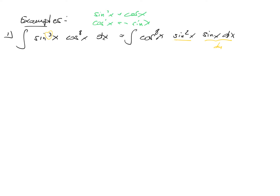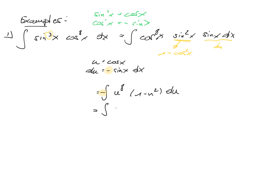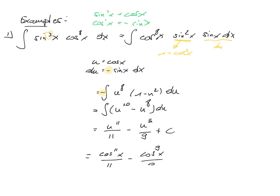Set u equal to cosine of x, so du is minus sine of x dx. Rewrite sine squared as 1 minus cosine squared of x, i.e., 1 minus u squared. The integral becomes minus the integral of u to the power 8 times 1 minus u squared du, giving minus the integral of u to the power 8 minus u to the power 10 du. This equals u to the power 11 over 11 minus u to the power 9 over 9 plus a constant. Transforming back, this is cosine x to the power 11 divided by 11 minus cosine x to the power 9 divided by 9 plus a constant.